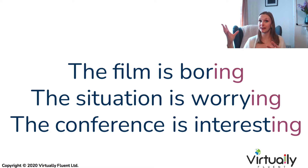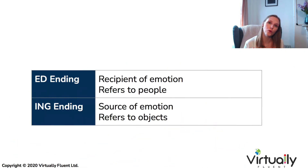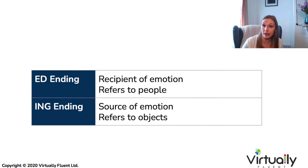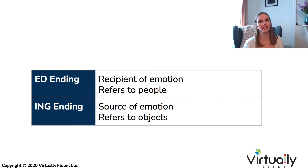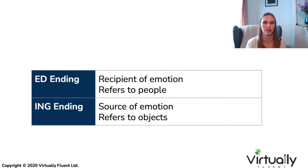Again: the situation is worrying, I am worried. The conference is interesting, I am interested. So the ED ending focuses on the recipient of the emotion — the person who receives that feeling — and this is normally a person or an animal. The ING ending talks about the source of the emotion — the thing giving out that emotion — and normally it's an object or a thing.